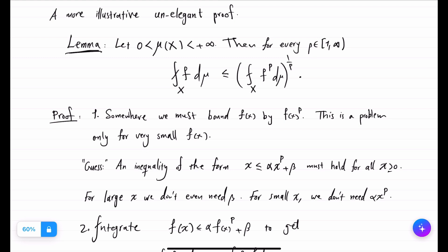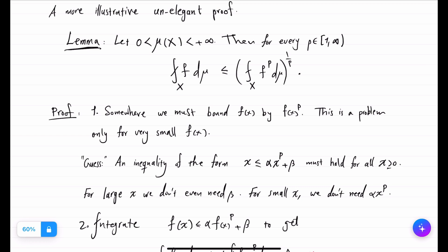Anyway, this lemma is itself very strong and it just says that average integral—so every time we have a dash through the integral sign that means we divide the end result of the integral by measure of the whole space X, which we have assumed to be positive and finite so it makes sense.